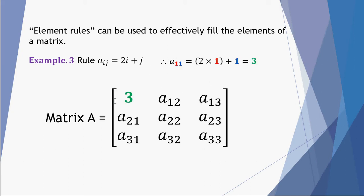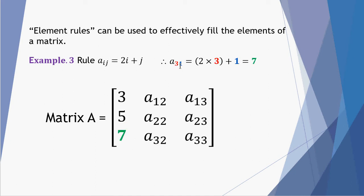The first element, first row first column: 2 times 1 plus 1 gives me 3. Second row, first column: 2 times 2 plus 1 for J gives me 5. Element 3 1: 2 times 3 is 6, plus 1 for the column number gives me 7.